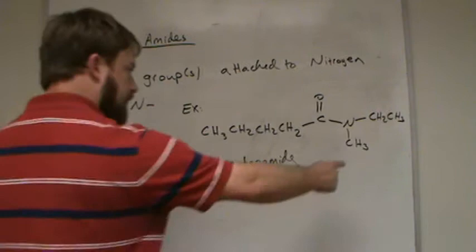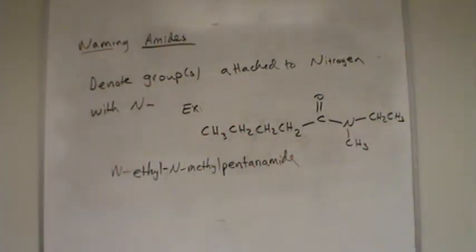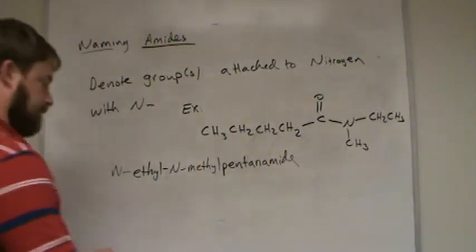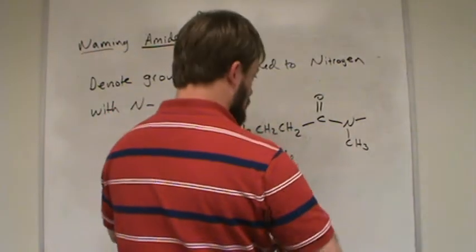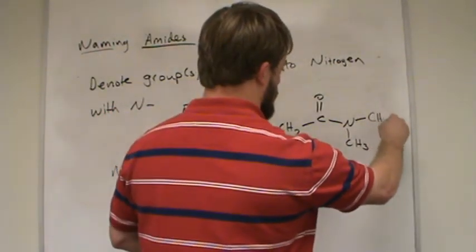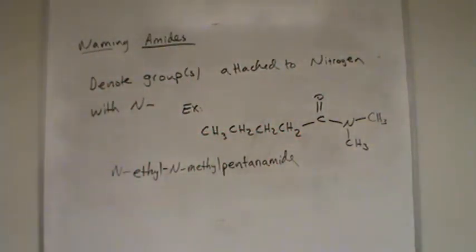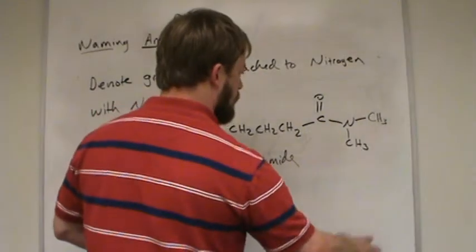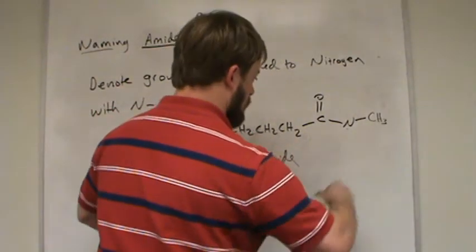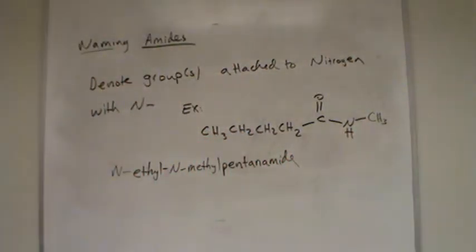What if instead of ethyl, we had another methyl group there? How do you think you would name it? We have to still indicate both methyl groups. We can't just say N-methyl. We have to say N,N-dimethyl-pentanamide. If it was like that, it would just be N-methyl-pentanamide.